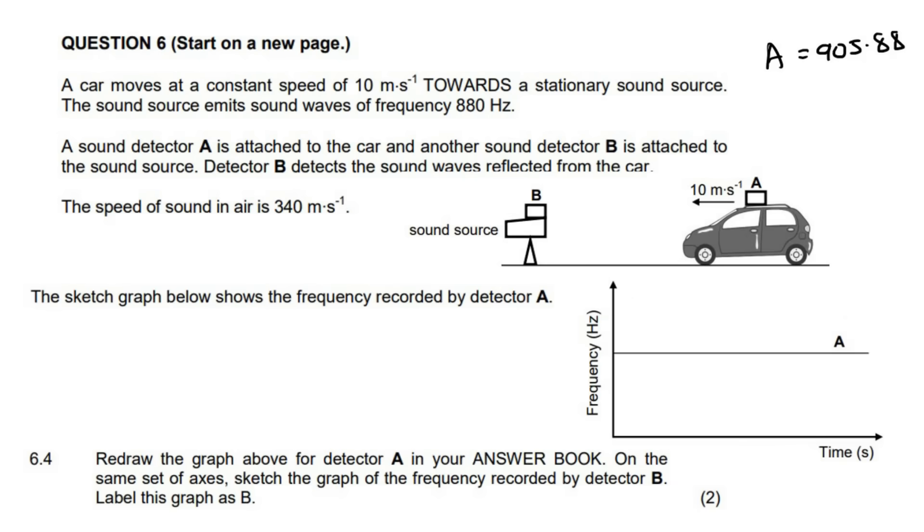The sketch graph below shows the frequency recorded by detector A. You can see that detector A is just going to be recording a constant frequency. Even when the car gets close, the amount of the compression that takes place stays the same. So this is just going to be 905.88, which is what we calculated. Redraw the graph above for detector A in your answer book. We've already got the drawing over here. On the same set of axes, sketch the graph of the frequency recorded by detector B.